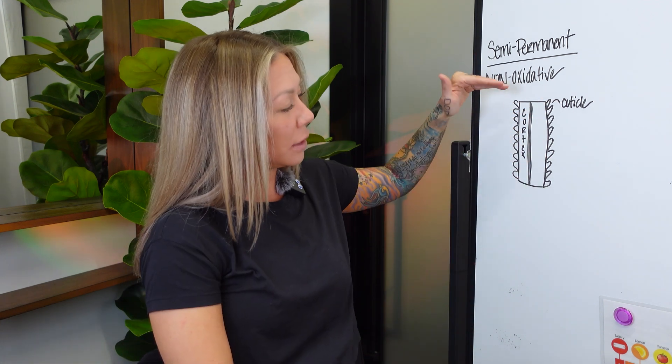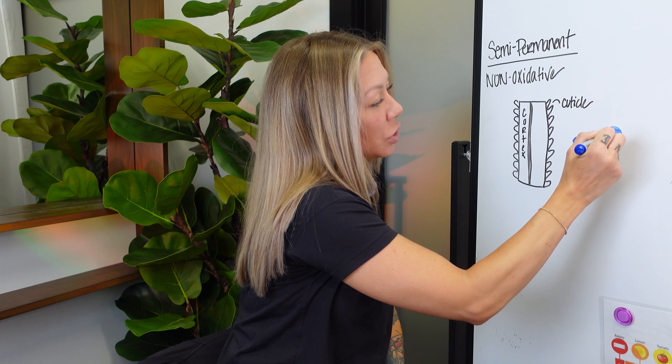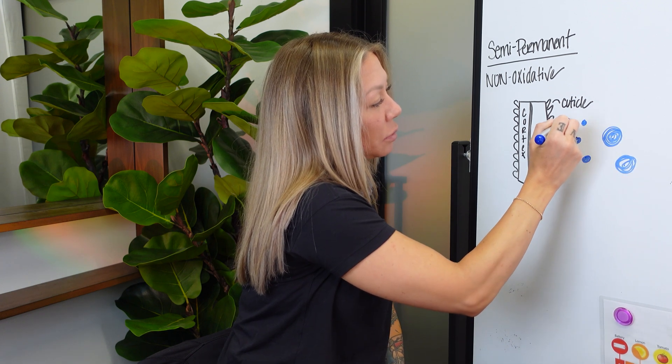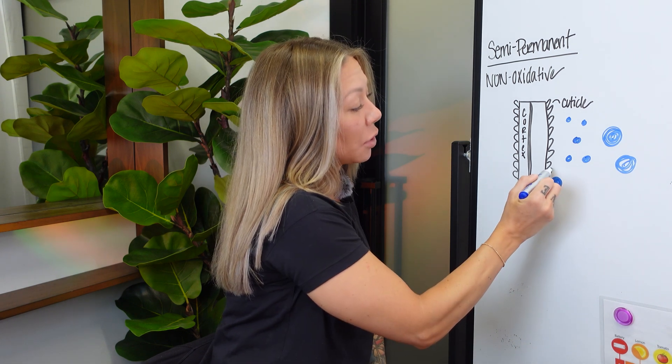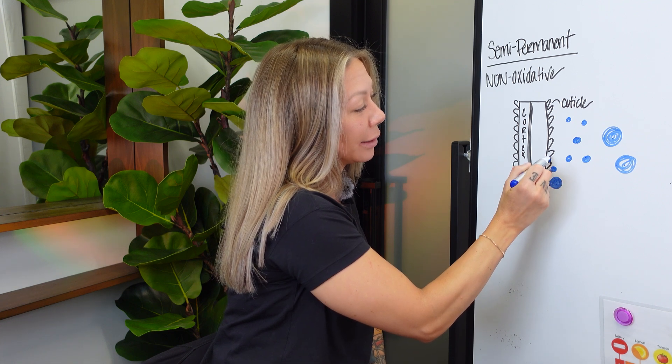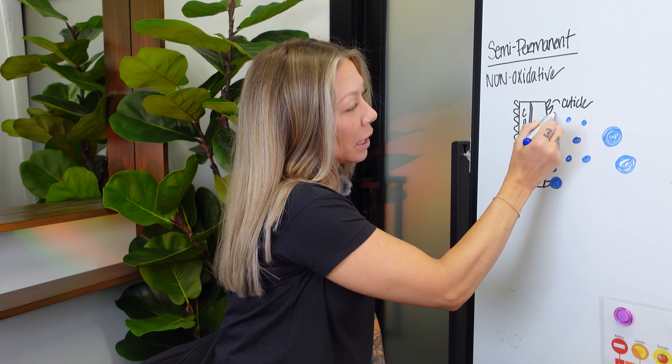Your book says semi-permanent lasts about three to eight shampoos. It depends on a lot of factors: your hair type, texture, what kind of water you're using, what kind of shampoo you're using. The hair color molecules are smaller than temporary. The temporary molecules — the big ones — sit on the outside because they're so big. Semi-permanent molecules are smaller so they can sit on the outside but also get in a little bit of the cuticle. They don't have a developer so they can't do chemical changes, but getting inside the cuticle a little is what makes them stay longer than temporary hair color.